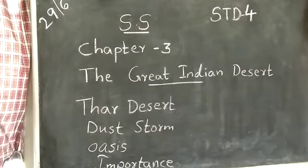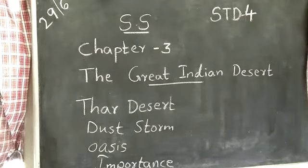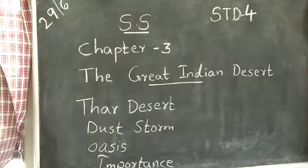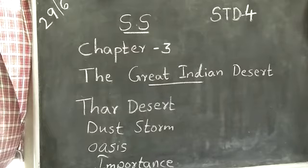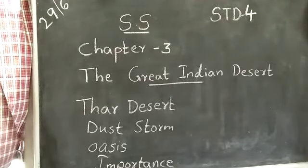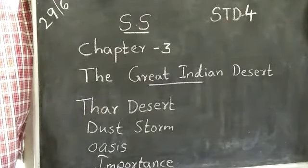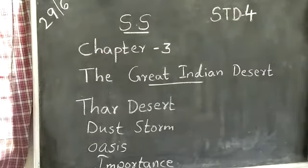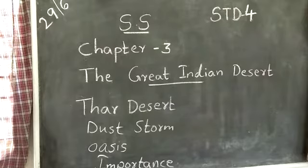What is the importance of the Peninsular Plateau? The Peninsular Plateau depends on its rivers. The main rivers are Mahanadi, Godavari, Krishna, and Kaveri. They flow eastward and fall into the Bay of Bengal. But two rivers do not flow into the Bay of Bengal — that is Narmada and Tapti, which flow into the Arabian Sea.